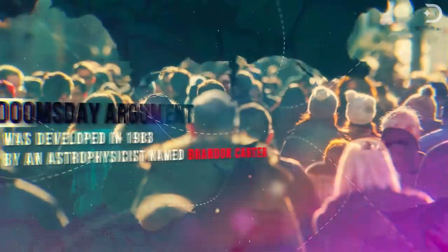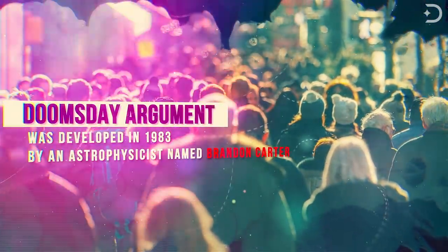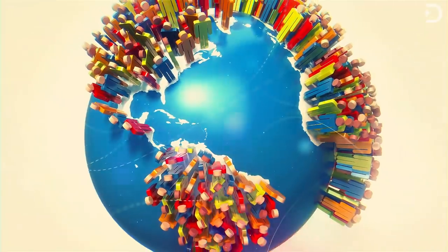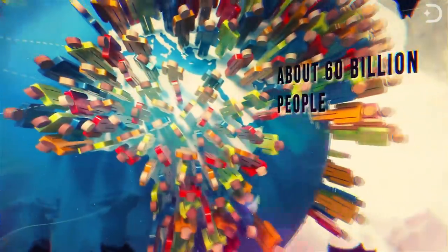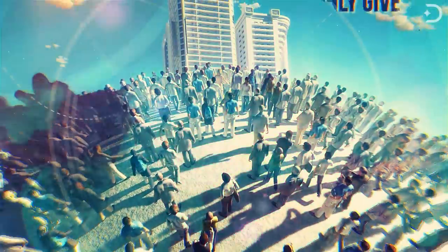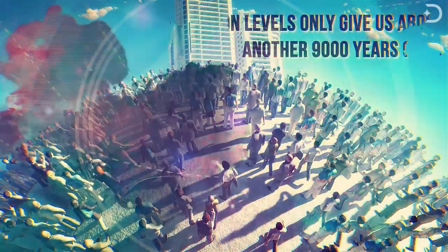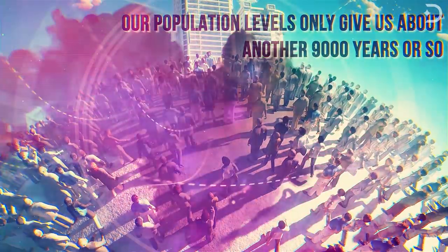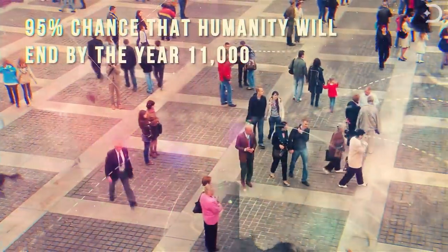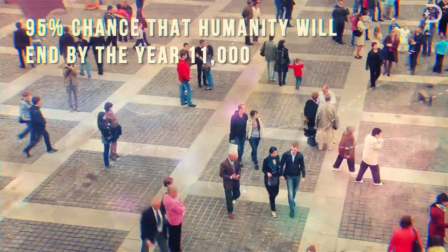There is a calculation called the Doomsday Argument, which was developed in 1983 by astrophysicist Brandon Carter. According to his calculations, if you assume that half of the humans who will ever live have already been born, you'll get about 60 billion people. If you also assume that another 60 billion are yet to be born, our population levels only give us about another 9,000 years or so. That means there is a 95% chance that humanity will end by the year 11,000.